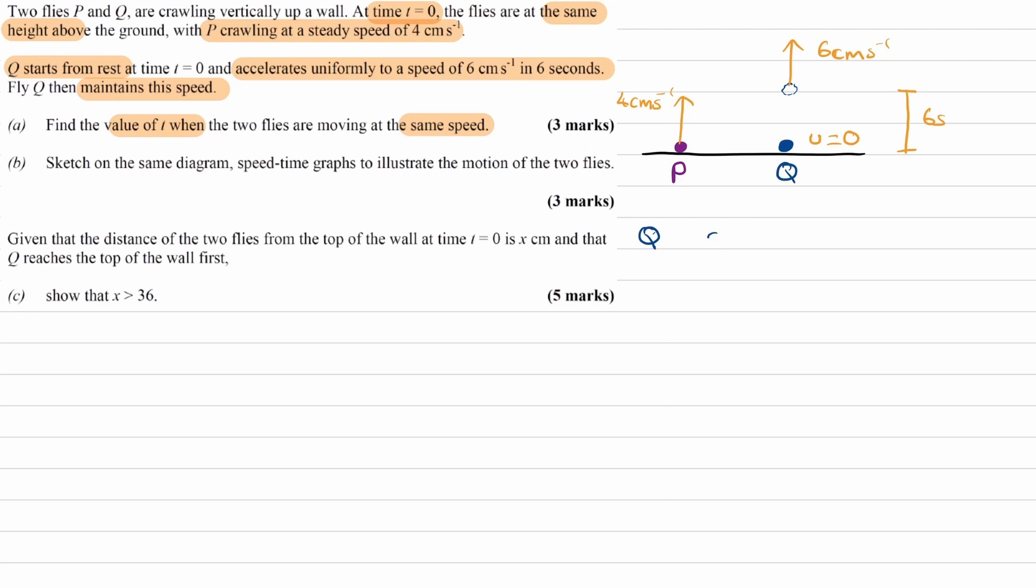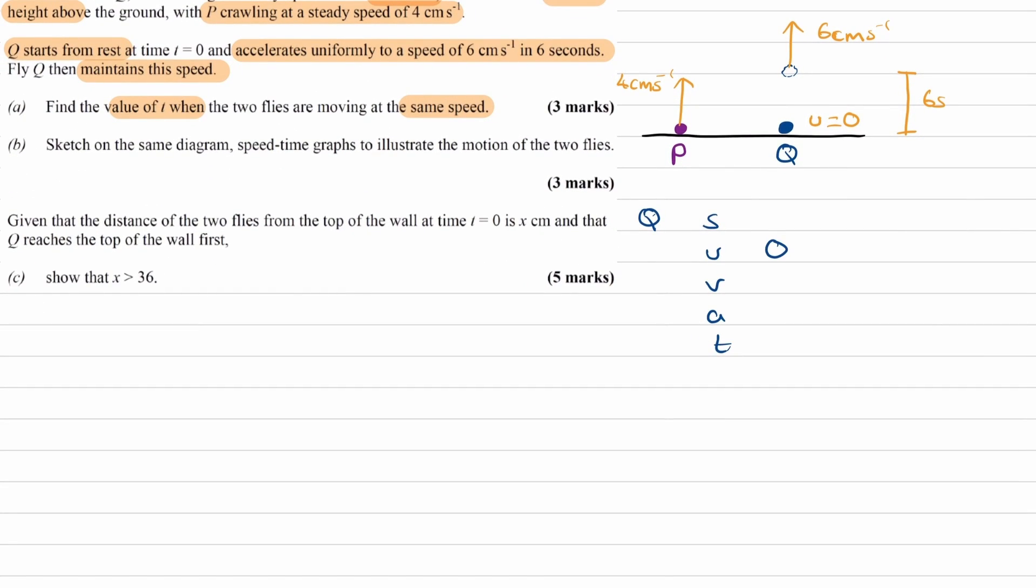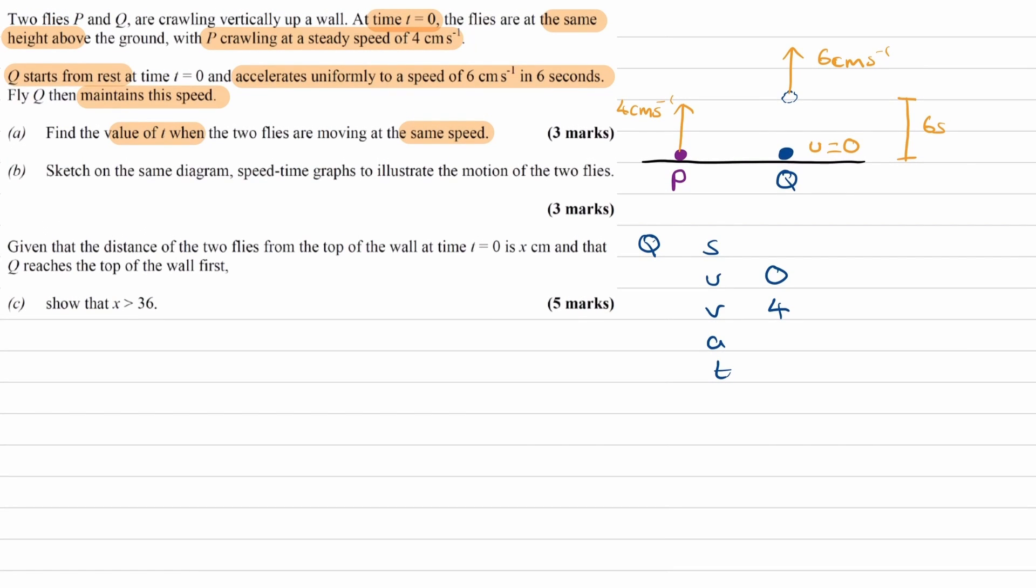So for Q, let's write out what SUVAT quantities we have in this table. We have the initial speed is 0. The final speed is 4. That's when we're trying to work out the time. And we don't have anything else. We don't have the displacement. We don't have the acceleration. We're trying to work out what time is. So we're going to have to work out one of these two things in order to work out time. So we can use the fact that Q goes from 0 to 6 cm per second in 6 seconds to work out what the acceleration is.